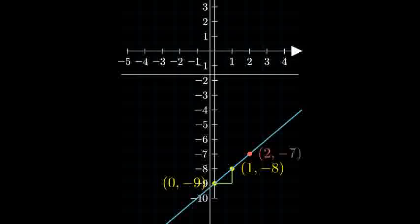To verify our line, let's test another point. When x equals 2, y should equal negative 7.